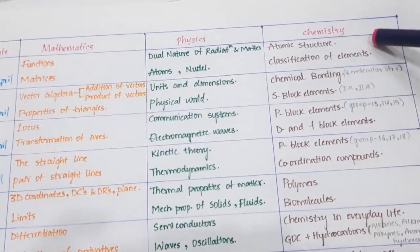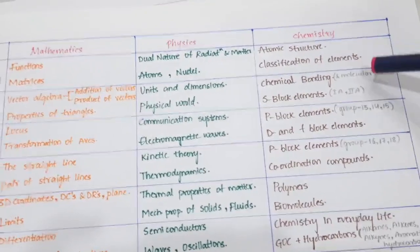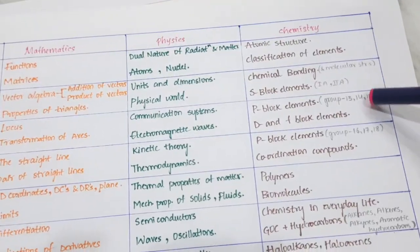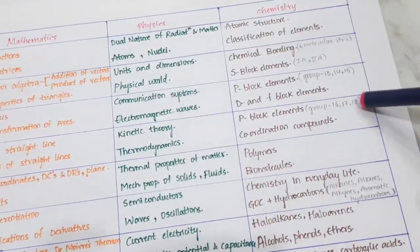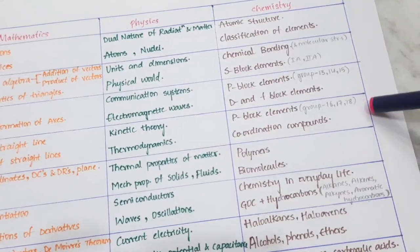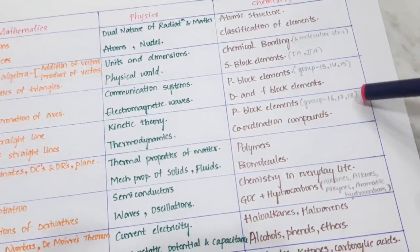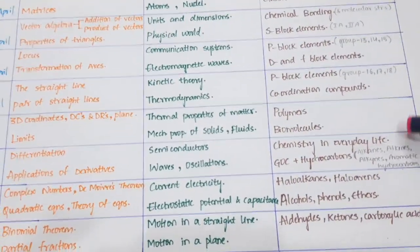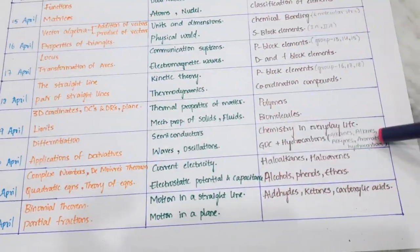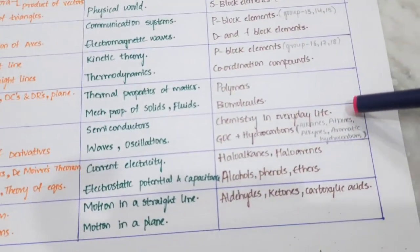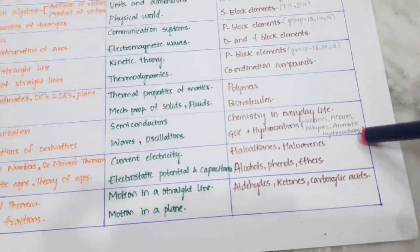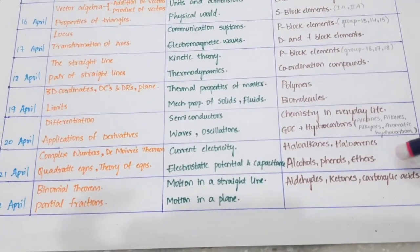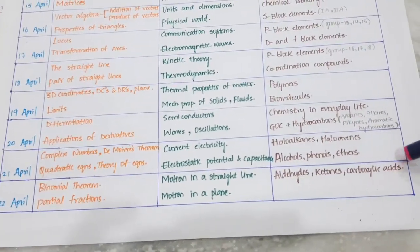Now chemistry. April 15th: Atomic Structure and Classification of Elements under the Periodic Table. 16th: Chemical Bonding and S-Block. 17th: P-Block, D-Block, and F-Block. 18th: P-Block remaining — groups 16, 17, 18 — and Coordination Compounds. 19th: Polymers and Biomolecules. 20th: Chemistry in Everyday Life and GOC plus Hydrocarbons — including alkanes, alkenes, alkynes, and benzene aromatic hydrocarbons.